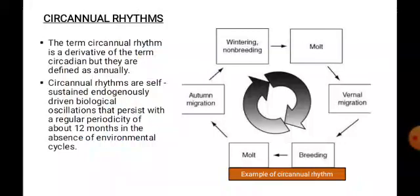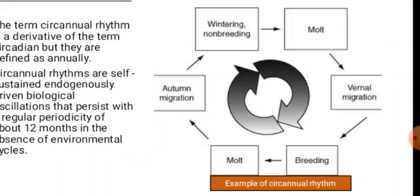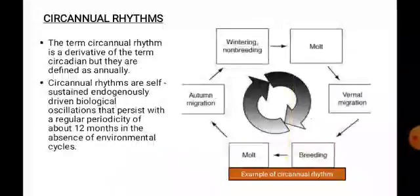The last type of biological rhythm is circannual rhythms — the rhythm that repeats itself after a year, also called circannual rhythms. They are internal rhythms that repeat after 12 months. A good example is the annual cycle in a bird: the bird breeds, then starts to molt, goes towards autumn migration, enters a non-breeding winter period, then molts again and migrates for breeding. This complete cycle repeats after 12 months.